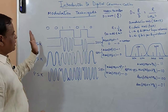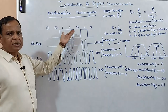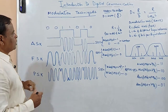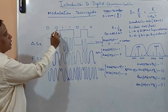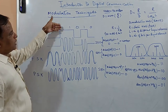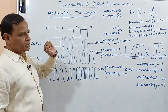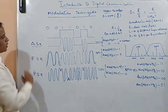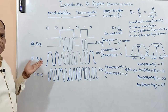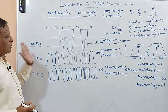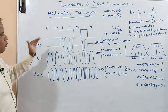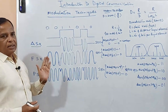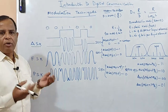Let us take a sample bits — consider a line coding scheme as far as NRZ is concerned. Zeros are represented with low voltage (negative voltage) and ones are represented with positive voltage. The first scheme is ASK — Amplitude Shift Keying. Here what we are doing is modifying the amplitude of the carrier in accordance with the modulating signal. In binary we have only two values — zeros and ones.